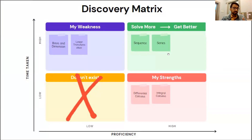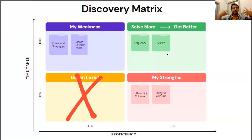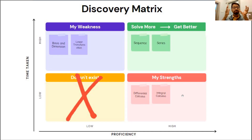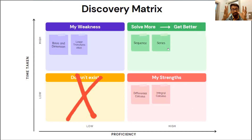In an exam, there are two dimensions. One dimension on the y-axis is time taken, and on the other axis is your proficiency. Knowledge and time taken depend on the topic — for example, integral calculus is usually lengthy because you have to do integrations. Multivariate probabilities involve a lot of integration. So maybe you know the theory and the integration well, but you cannot apply it in exam time. You have to identify those. So we have three categories: you're really good and taking less time — that's your strength. Your proficiency is high but time taken is also high — that's solve more, get better. And your proficiency is low with time taken high — that's your weakness. You have to discover this fast. That's super important.